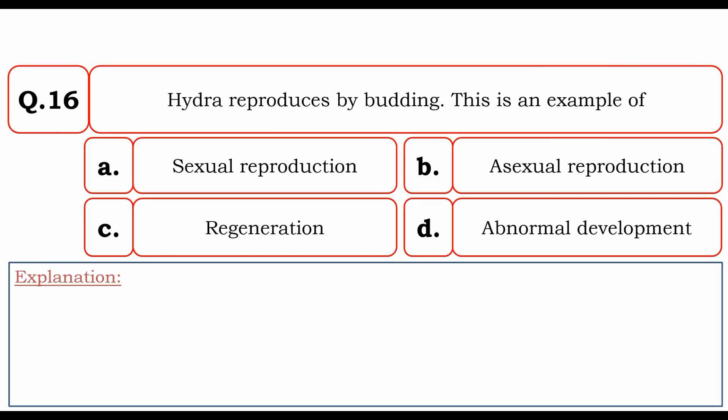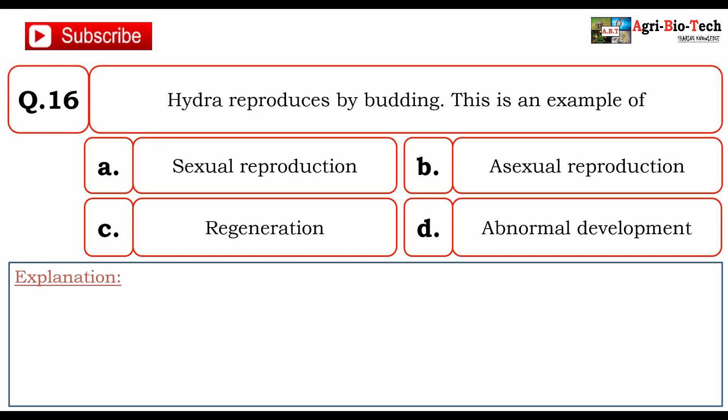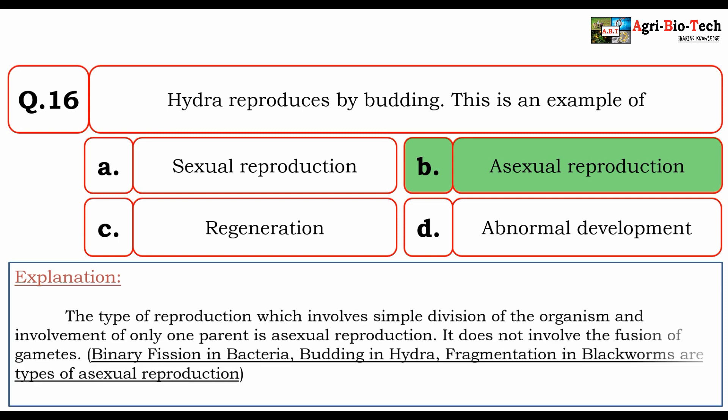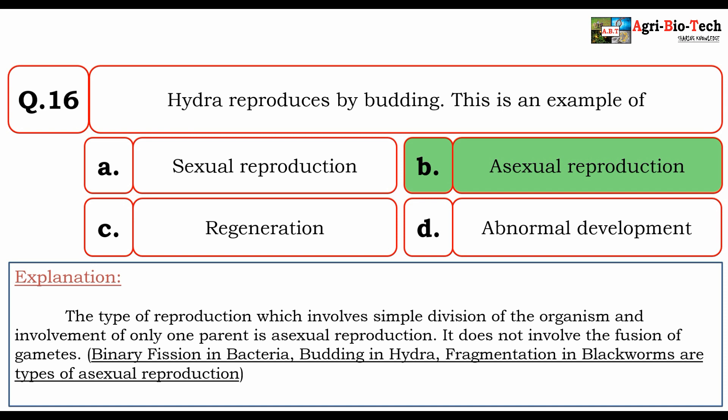Hydra reproduces by budding — this is an example of: A. sexual reproduction, B. asexual reproduction, C. regeneration, D. abnormal development. The correct answer is B. asexual reproduction. The type of reproduction involving simple division of the organism with only one parent is asexual reproduction. It does not involve the fusion of gametes. Binary fission in bacteria, budding in Hydra, and fragmentation in black worm are types of asexual reproduction.